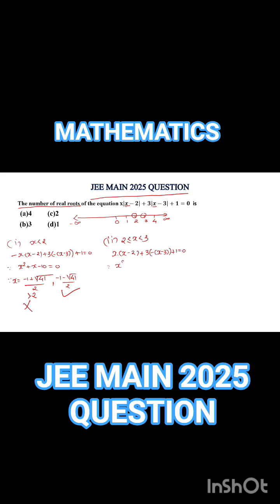Simplifying Case 2: x²−2x − 3x+9 + 1 = 0, giving x²−5x+10 = 0. Applying the discriminant formula: discriminant = 25 − 40 = −15, which is negative. A negative discriminant means the square root gives a complex number, so there are no real roots in this interval. Case 2 yields no real solutions.